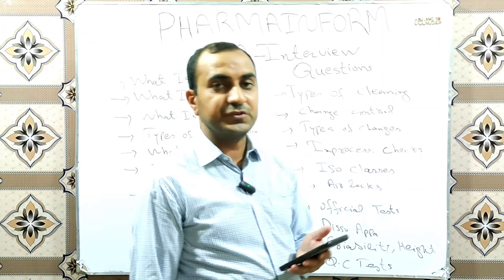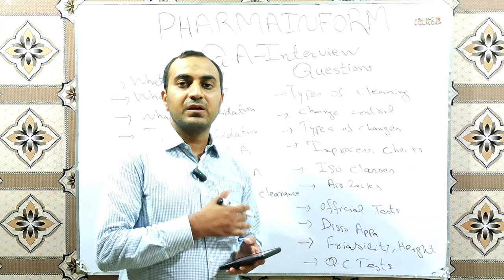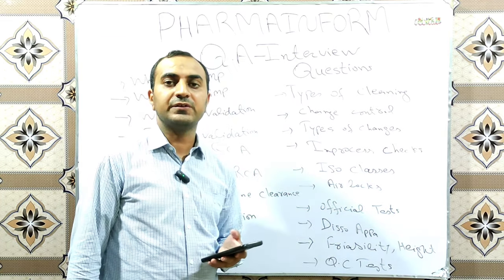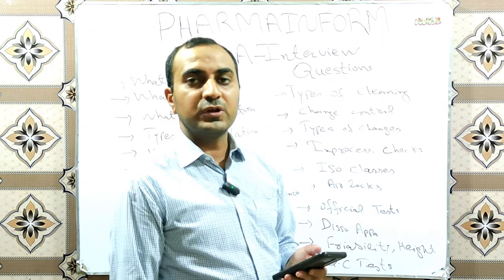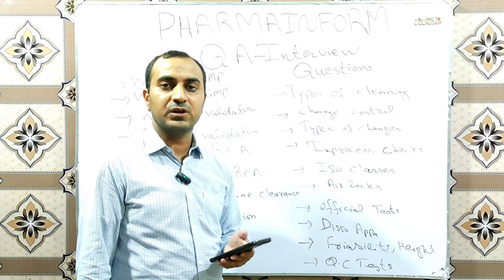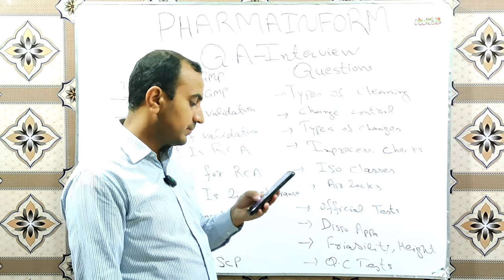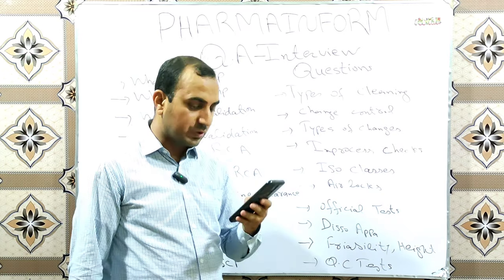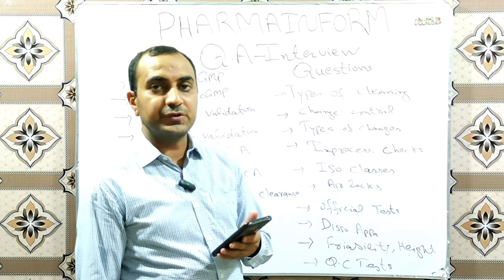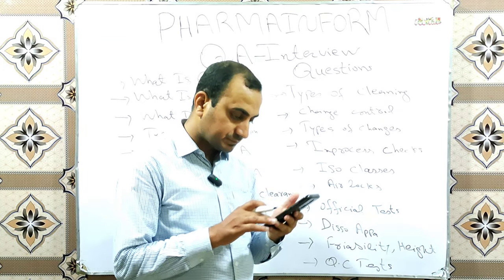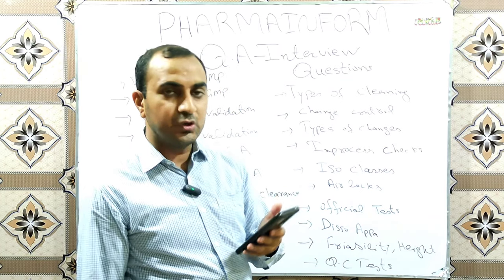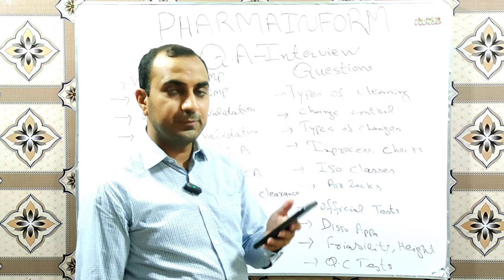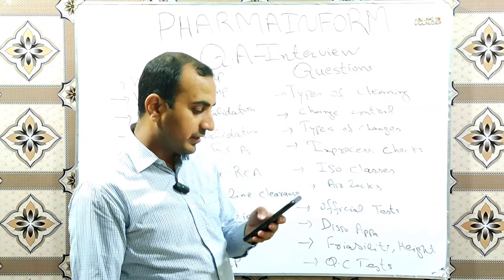Oral dosage forms are manufactured in which ISO class? ISO classifies pharmaceutical industry clean rooms into four classes: ISO class 5, class 6, class 7, and class 8. ISO class 5 is the cleanest area and ISO class 8 is the least clean. Oral solid dosage forms are manufactured in ISO class 8 at rest and are non-classified during working. Oral liquid dosage forms are manufactured in ISO class 7 (Grade C) at rest and ISO class 8 during working. Filling and sealing of sterile products takes place in ISO class 5 (Grade A).